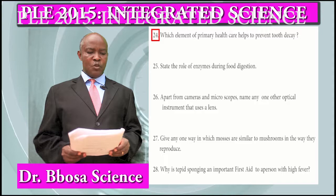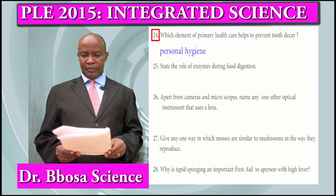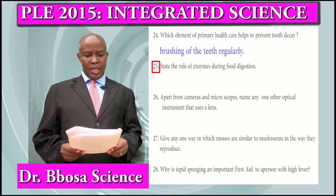Question 24: Which element or practice of personal hygiene helps to prevent tooth decay? Personal hygiene — brushing the teeth regularly.